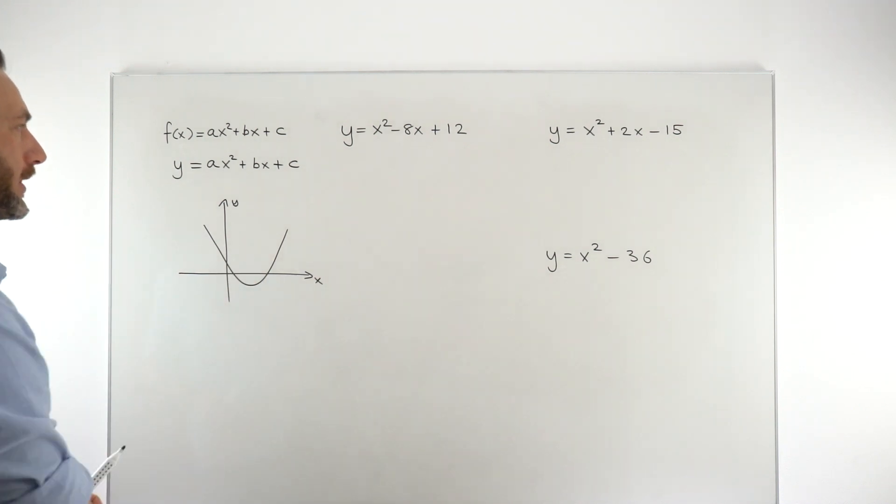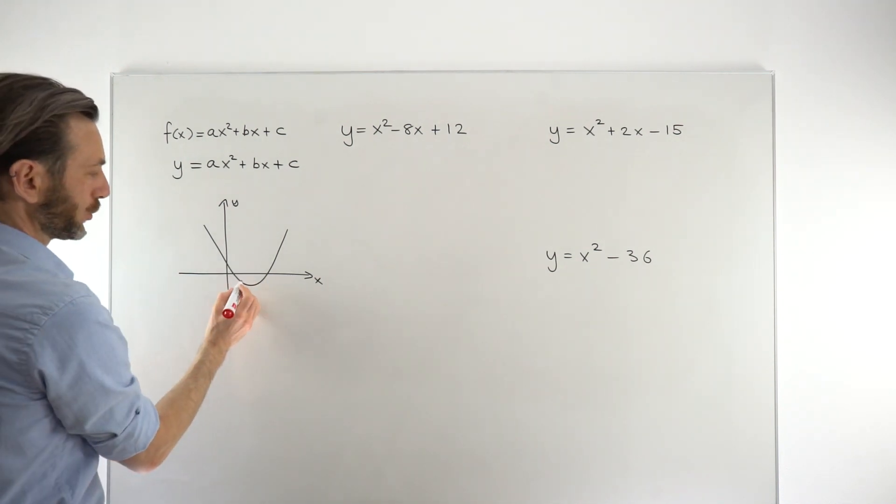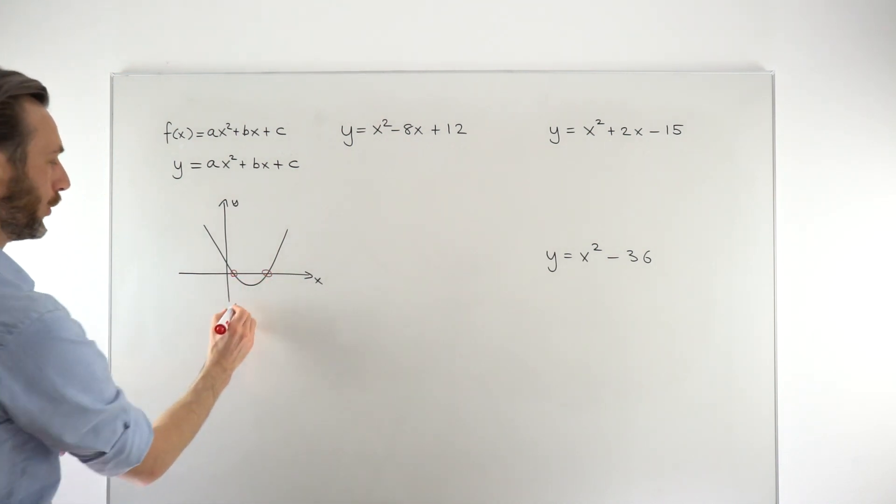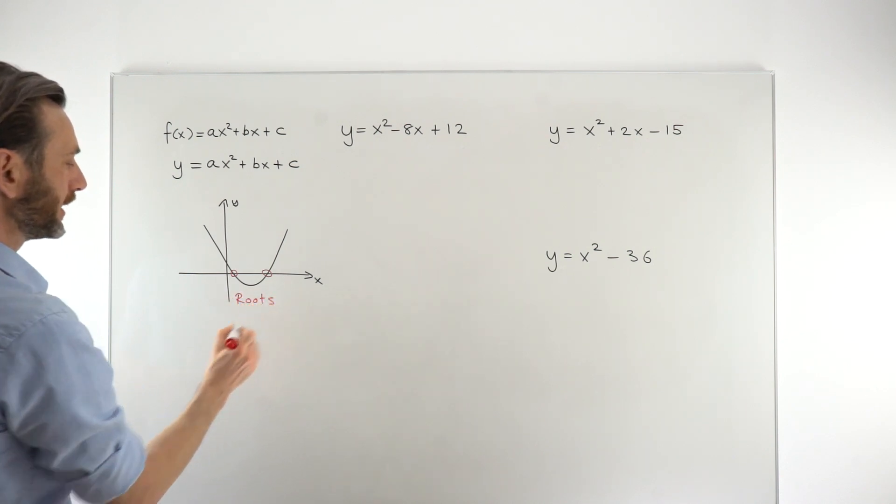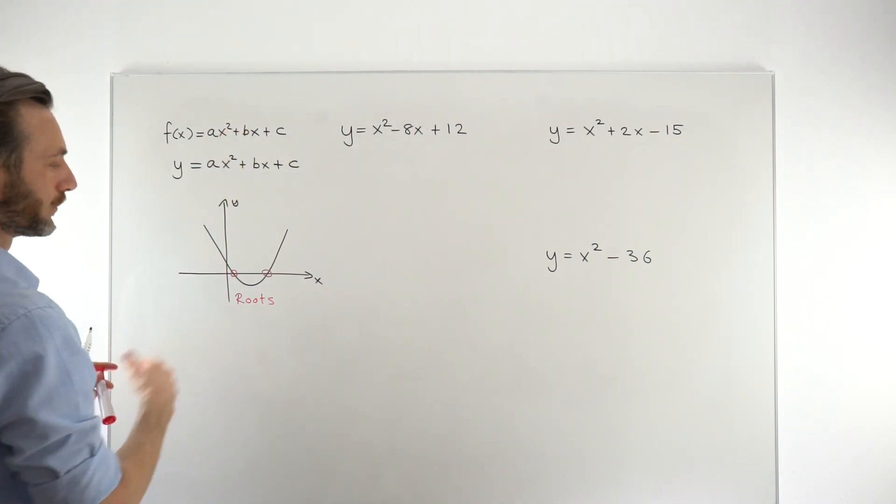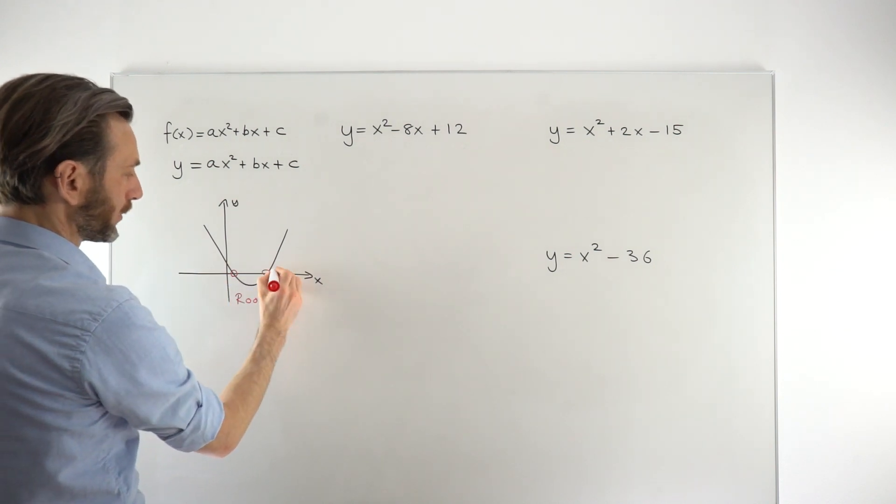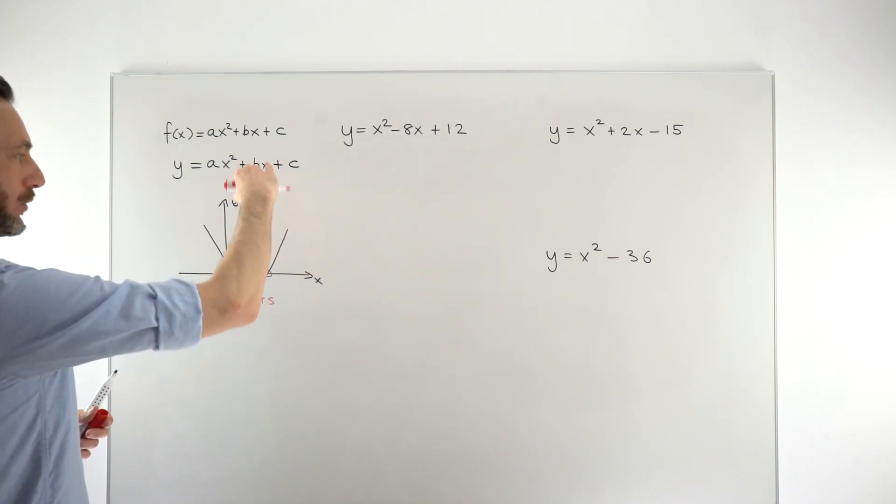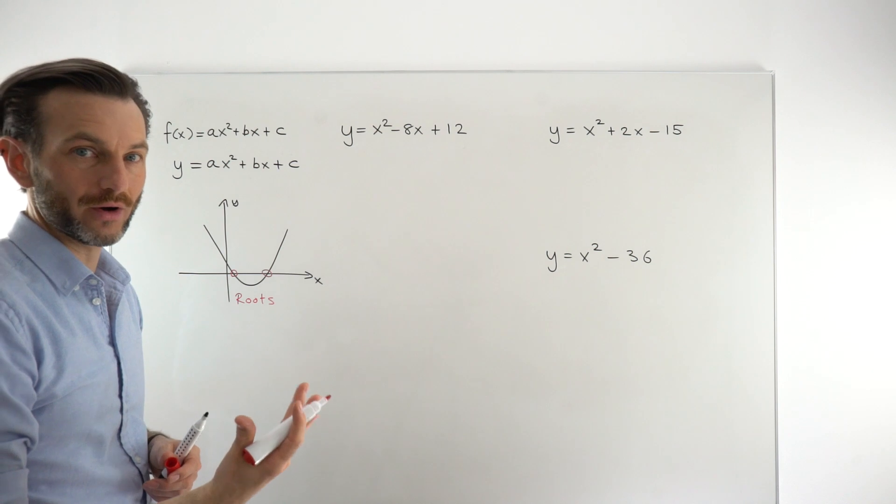What we're talking about in this class are the roots of the graph of a quadratic function. The roots are where the graph cuts over the x-axis. So these are called the roots. If you think about it, those points are on the x-axis. So therefore, they don't have any height. They don't have any y value. They've got a y value of 0.